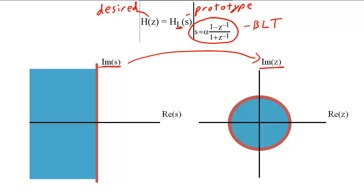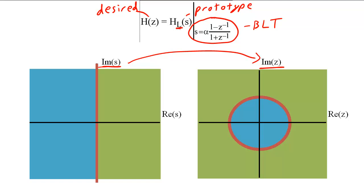We also see that points to the left of the imaginary axis on the S-plane map to points inside the unit circle on the Z-plane. The mapping also shows that points to the right of the imaginary axis on the S-plane map to points outside the unit circle on the Z-plane.